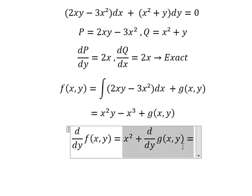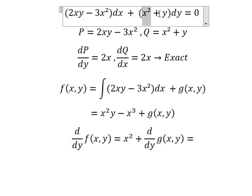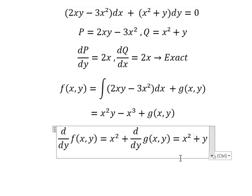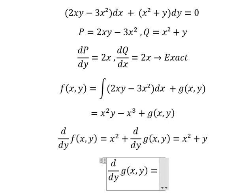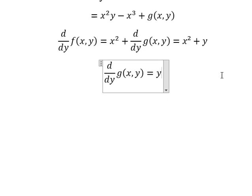And we know that this one equals to this one. Now we simplify x squared for both sides and we have like this. Next we put the integration for both sides.